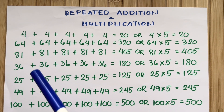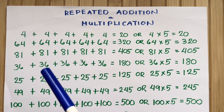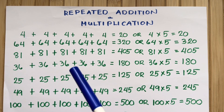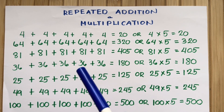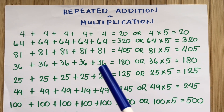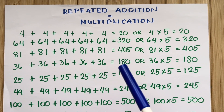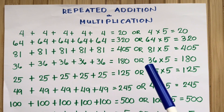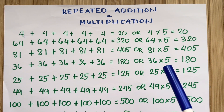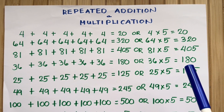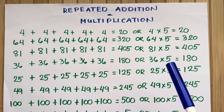36 plus 36 plus 36 plus 36 plus 36 is equals to 180. Or, 36 times 5 is equals to 180.